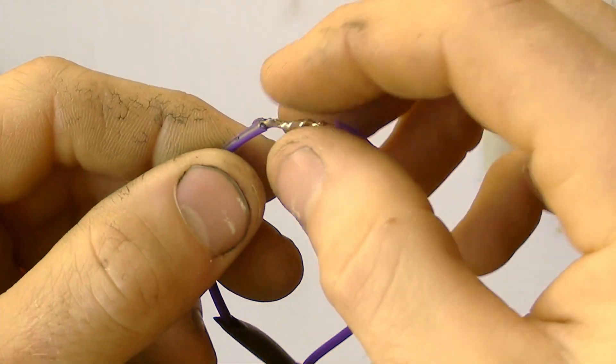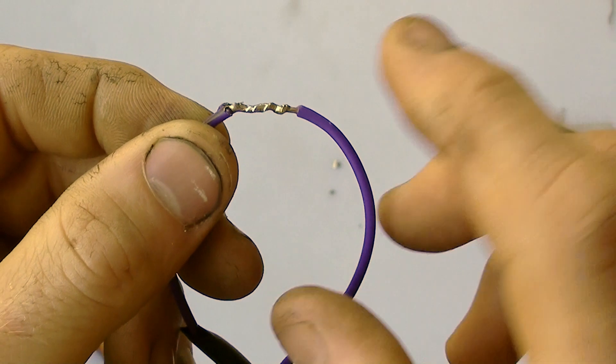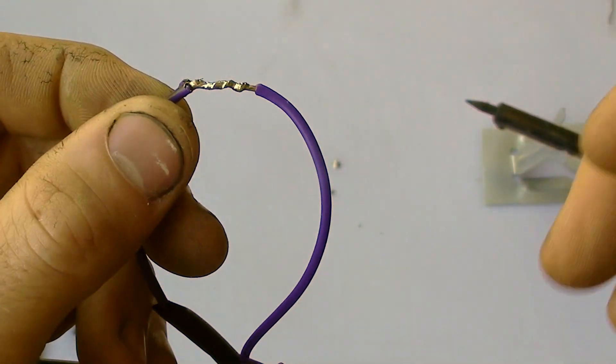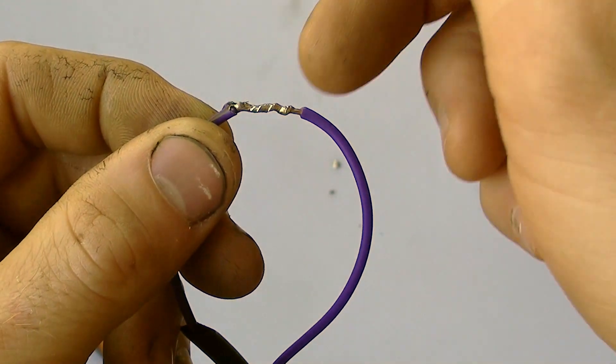So if you do get a bit of excess solder on your joint just like you saw me do then you can just give it a little flick with the end of the soldering tip and basically that excess solder should just flick off.